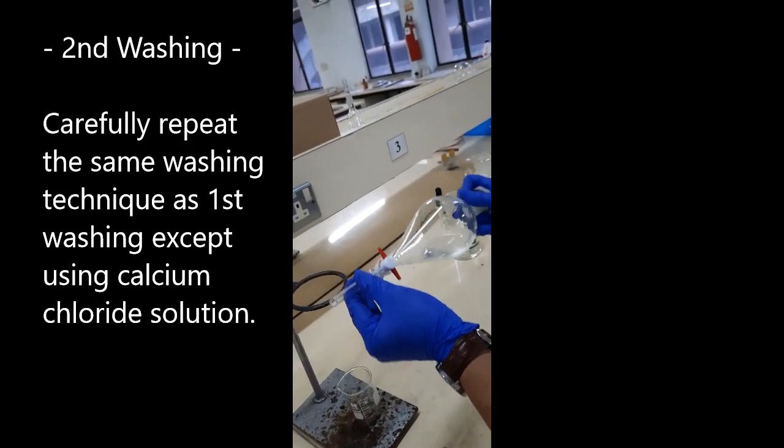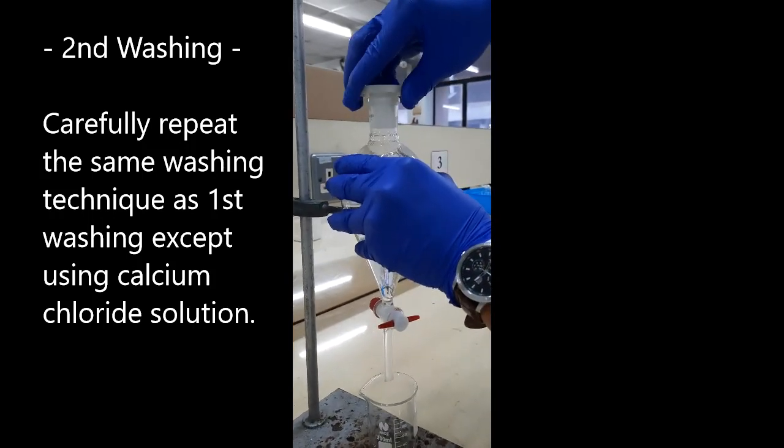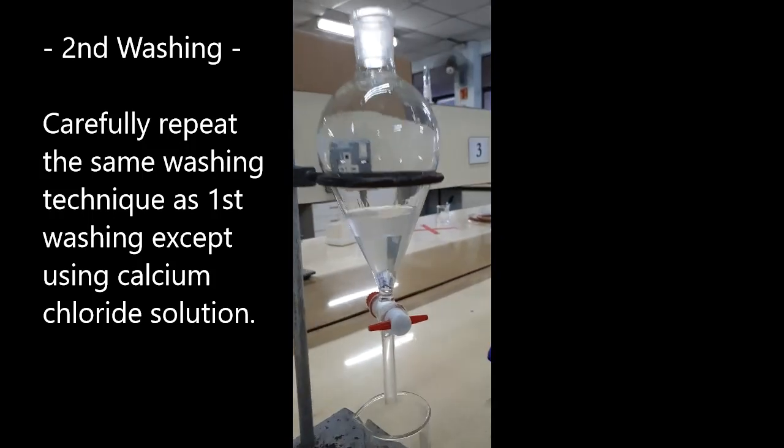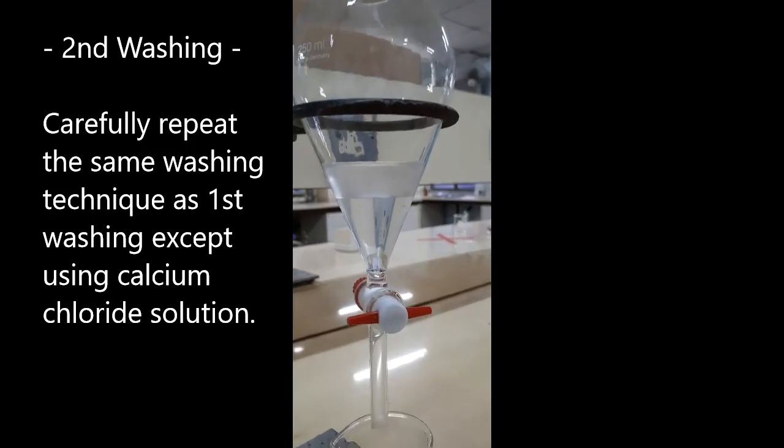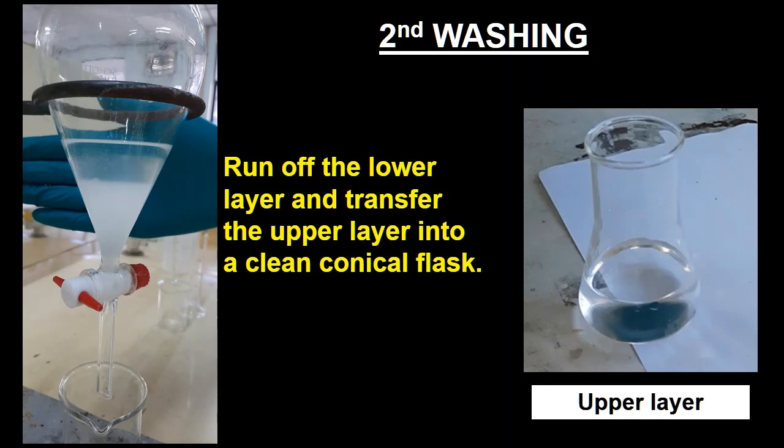Leave the separating funnel to stand for a while before opening the cap. Observe the liquid layers before and after shaking the separating funnel. Run off the lower aqueous layer. Pour the upper layer into a clean conical flask.